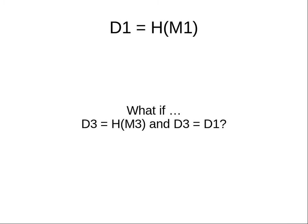Conversely, if the hash of M1 equals D1 and the hash of M3 equals D3 and the two hash values D1 and D3 are the same, then the messages are the same. It's the reverse of the previous principle: if the hash values are the same, then the messages are the same. We use that for authentication — to make sure things haven't been modified.